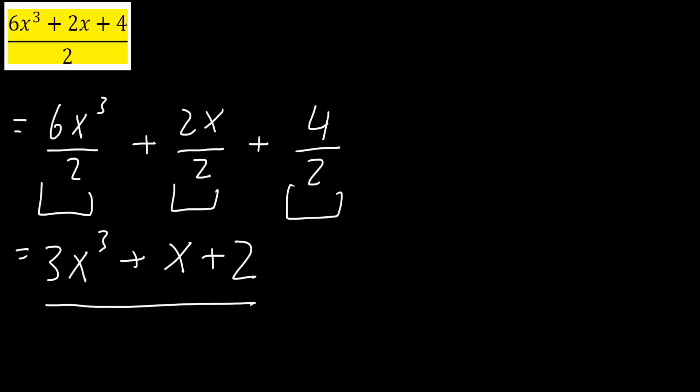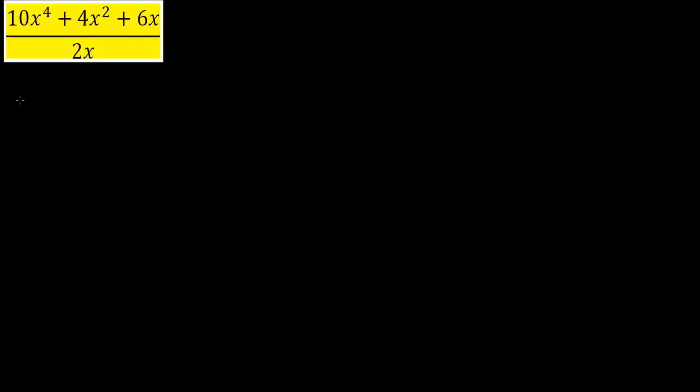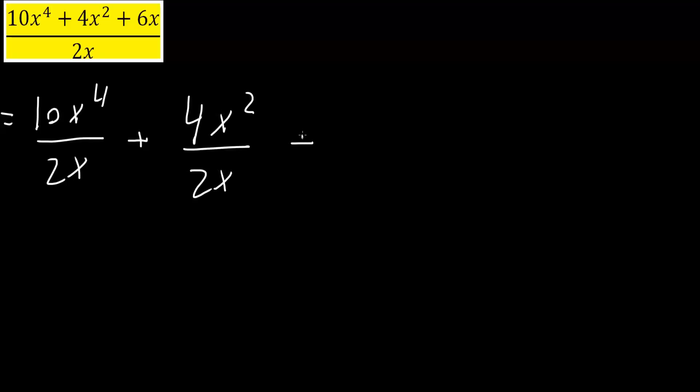Now we'll do the second problem. It's almost the same. So I have 10x raised to the fourth and I'm going to divide by 2x plus 4x squared divided by 2x plus 6x divided by 2x.